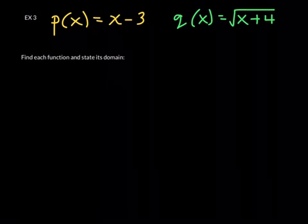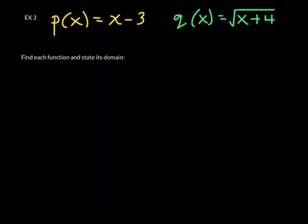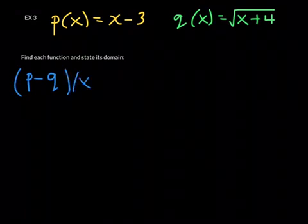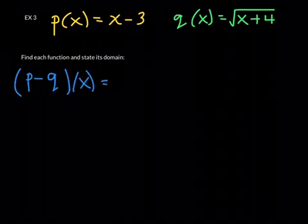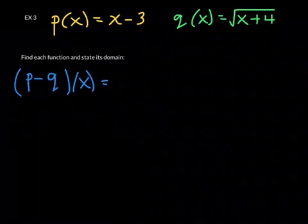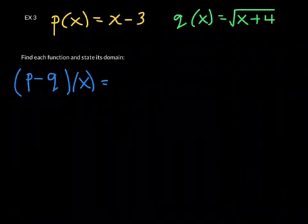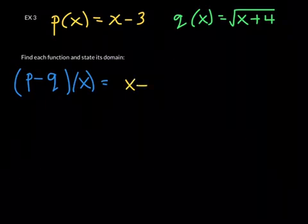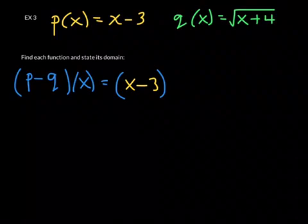So the first function I'm going to have you find is a difference function, and it'll be p - q at x. This is very similar to what we were doing earlier, just with different functions. Now we're going to take p, which is x - 3. To be really clear, I'm going to use parentheses here. I might have failed to use parentheses earlier, but it's always safer to use parentheses.